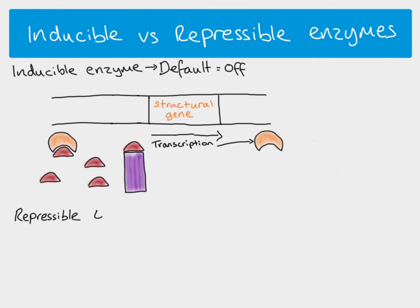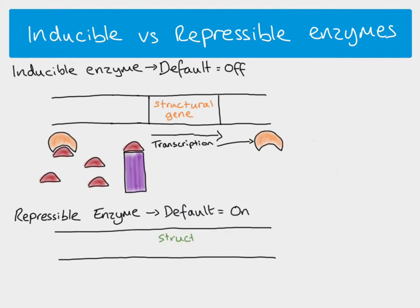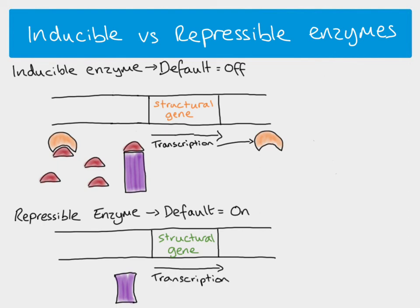The second type, the repressible enzyme, is essentially the opposite. The default state is ON. Here's our DNA with a different structural gene coding for a different enzyme, and in the normal state the repressive protein is not bound to the DNA, which means transcription takes place and our repressible enzyme is produced.